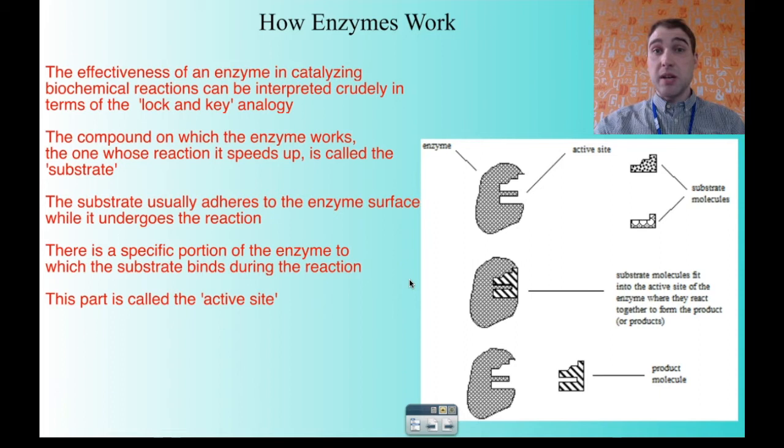Why does this reduce the activation energy? The reason is the enzyme is providing the correct orientation. Remember in collision theory, the reactants need to collide with the right amount of energy, but they also need to collide in the right orientation. In this case, the enzyme is providing the right orientation for the bonds to be produced or broken. Because you're providing the correct orientation, you don't need to provide as much energy because the chances of the reaction occurring are quite high because they're interacting at the surface at that active site.